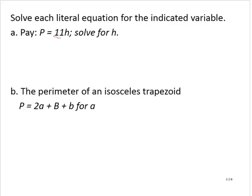Notice we already have the variable term isolated, so we don't need to add or subtract. We just need to remove that factor of 11. So I will divide through by 11.